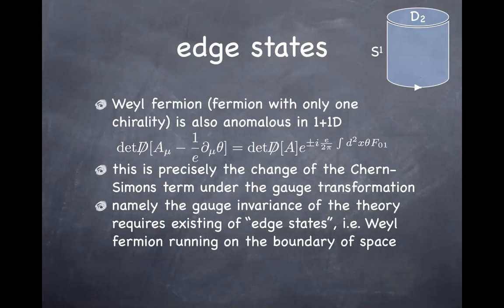Student: So the Chern-Simons term plus the chiral fermion would be manifestly gauge invariant? That's correct.